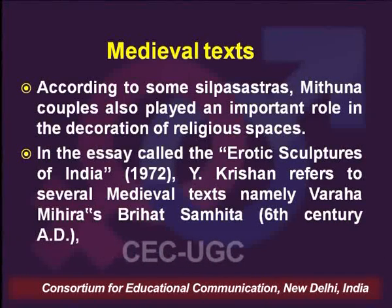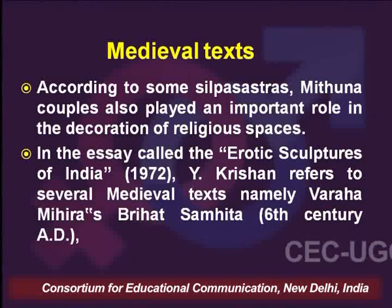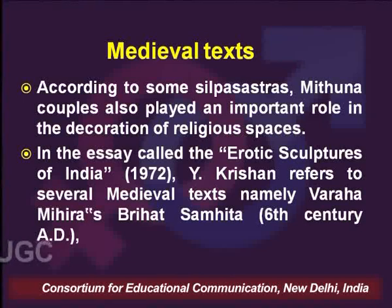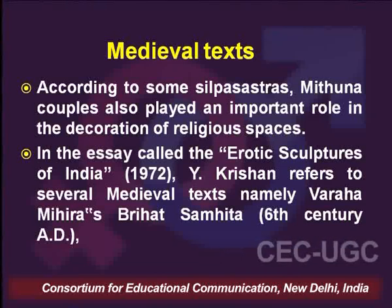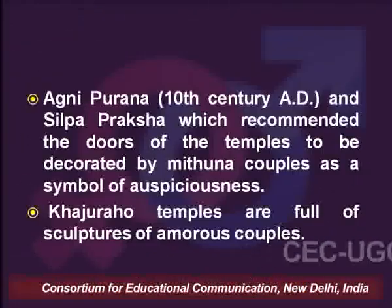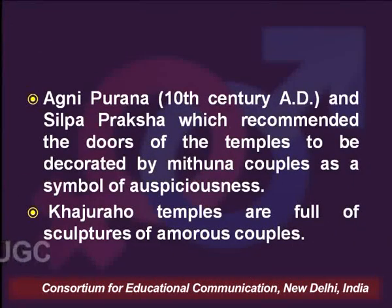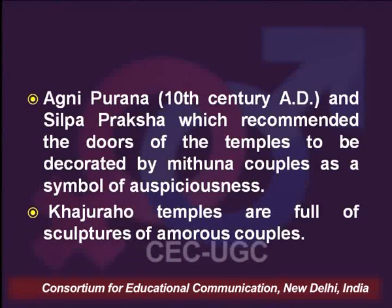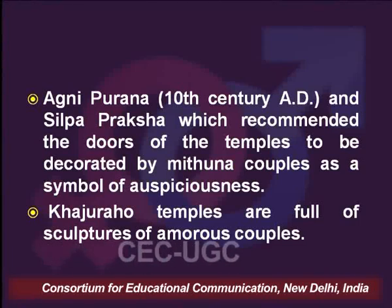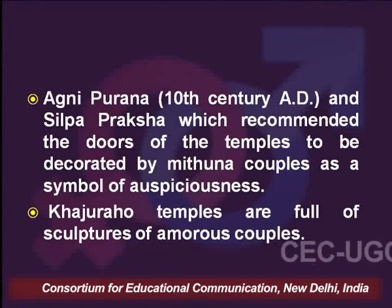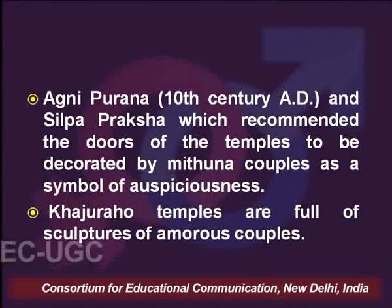In an essay called 'The Erotic Sculptures of India' by Vaikrishna, there is a description of several medieval texts: Varaha Meher's Brihat Samhita dated to the 6th century AD, Agni Puran dated 10th century AD, and Silpa Prakash. All these recommended that the doors of temples should be decorated by Mithuna couples as a symbol of auspiciousness. It is in this background that one can describe the existence of Khajuraho temples, which are full of sculptures of amorous couples.